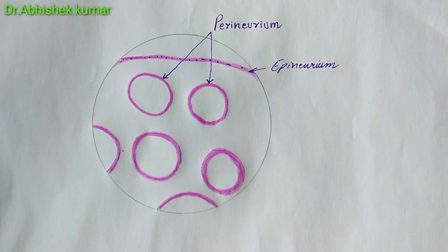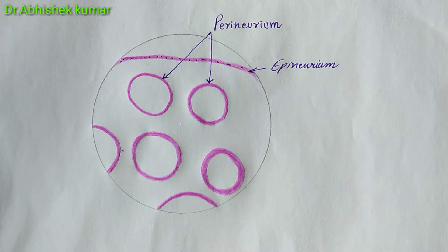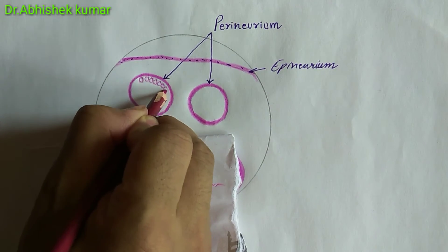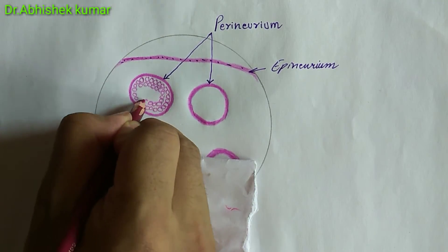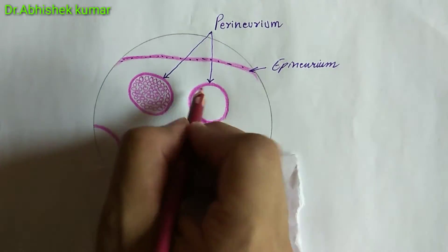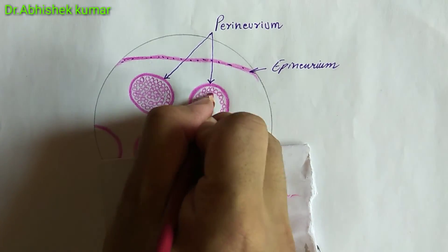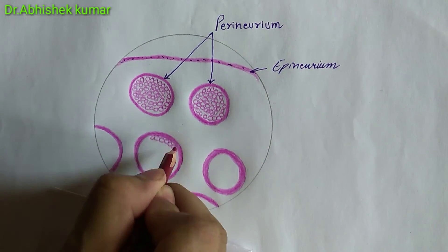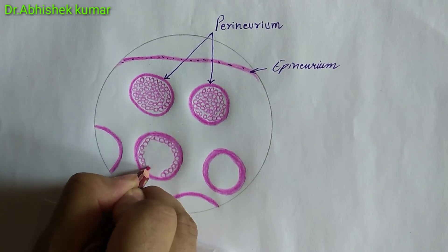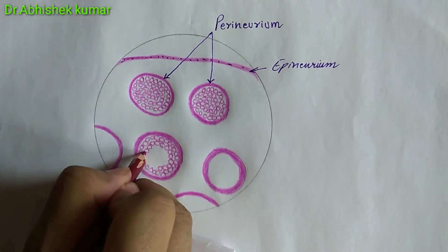Along with this, the perineurium also contains cells like fibrocytes. Fibrocyte cells are also present on the outer margin of the perineurium. Inside the perineurium, the myelinated axons are present.